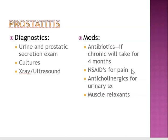Anticholinergics may reduce voiding symptoms like frequency, urgency, and dysuria. Some of these are going to be Detropan, Oxybutynin, Detrol, and Vesicare. These relax smooth muscle and help with spasms.